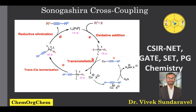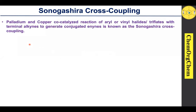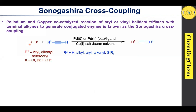After that, I will walk you through 10 important examples to help you understand this topic, so grab your notebook and let's get started. First, what is the Sonogashira cross-coupling reaction? It is a powerful carbon-carbon bond forming reaction.